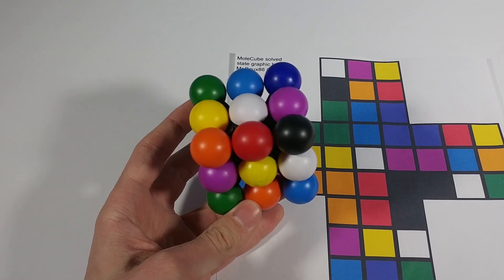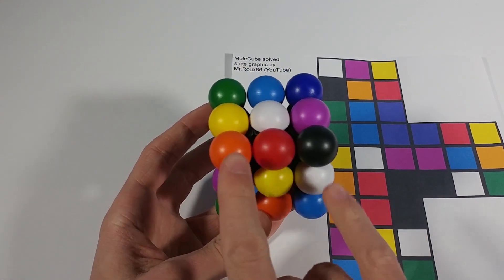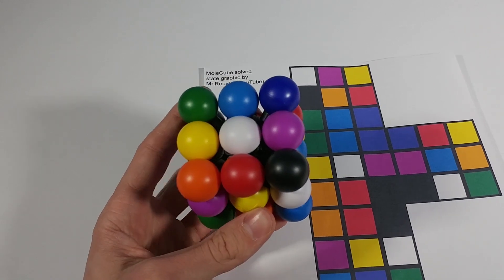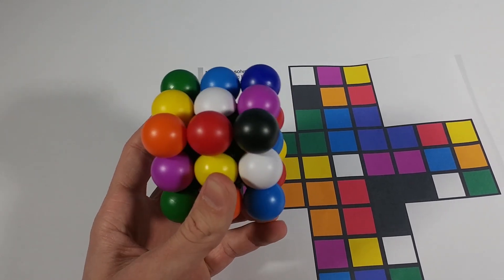Now if we look, purple and white underneath the orange and black. So now we're good. We've got the first two layers completely solved.